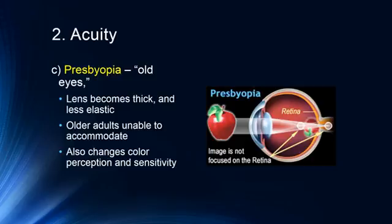Presbyopia literally means 'old eyes.' As you reach your 40s to mid-40s, the lens becomes thick and less elastic, so you're less able to accommodate. People become a little bit nearsighted, and this is something laser correction cannot fix — you really need reading glasses. As we get older, we also get changes to color perception and sensitivity. Older adults need high contrast like black on white, and have difficulty seeing blues and yellows due to changes in both the lens and the retina.